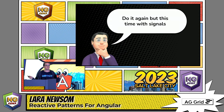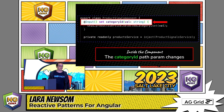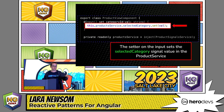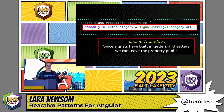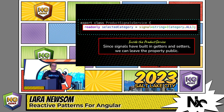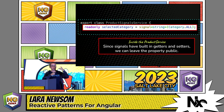Let's do that again but with signals. We still have our setter, and we're just going to call set on the signal since they have built-in getters and setters. The benefit is clear: since signals have built-in getters and setters, we can publicly expose those directly without having to write our own.